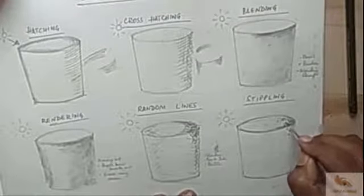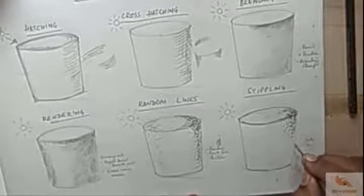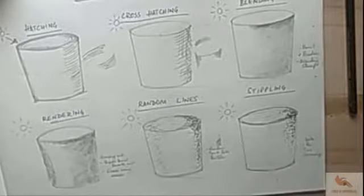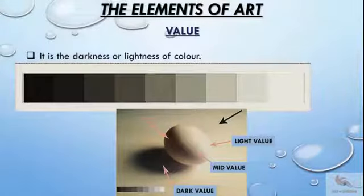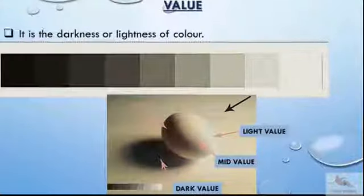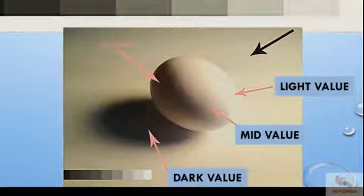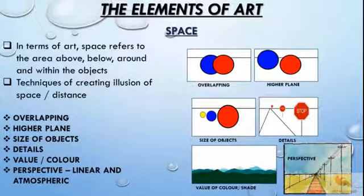Stippling: this is a method wherein countless dots are used. The more the concentration of dots, the darker the area. It is most suited for pen drawing. Value: the darkness or lightness of a color. An object is highlighted by brighter value (white), and shadow is shown by darker tone of the color.